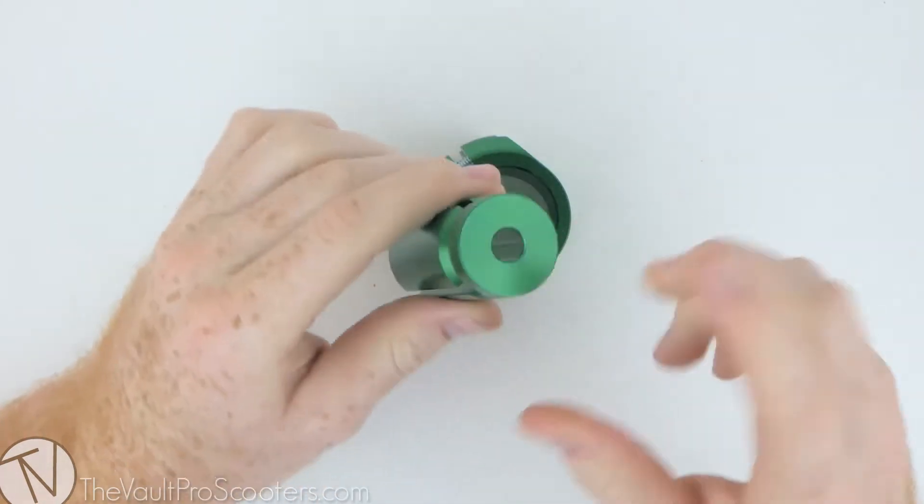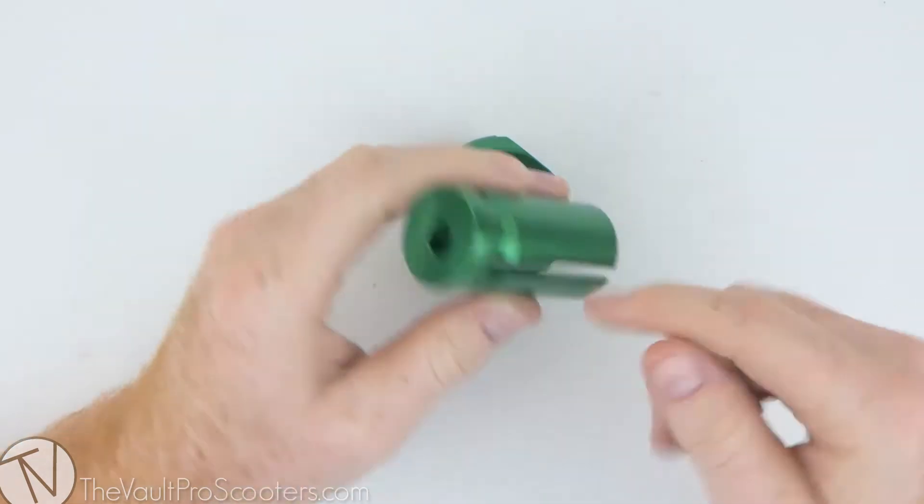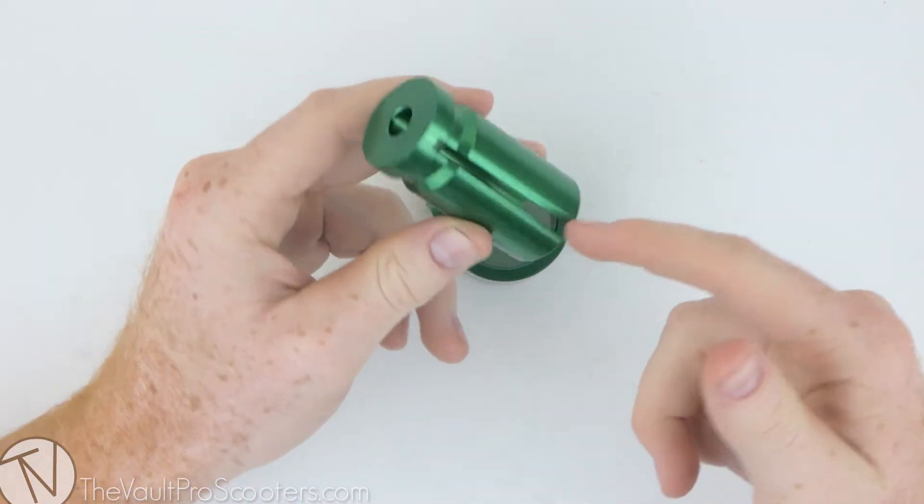This is an IHC shim with an outside diameter of an HIC shim. Basically this thing was made so you can run oversized bars with IHC compression.